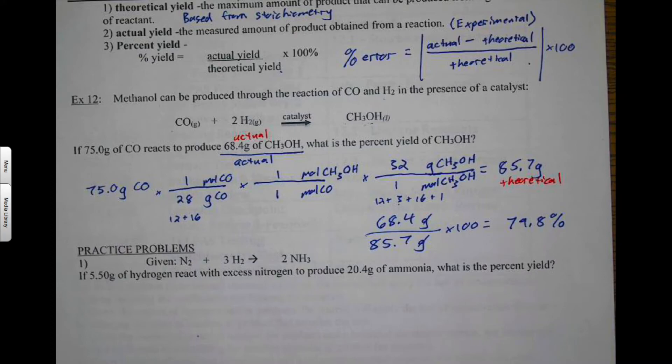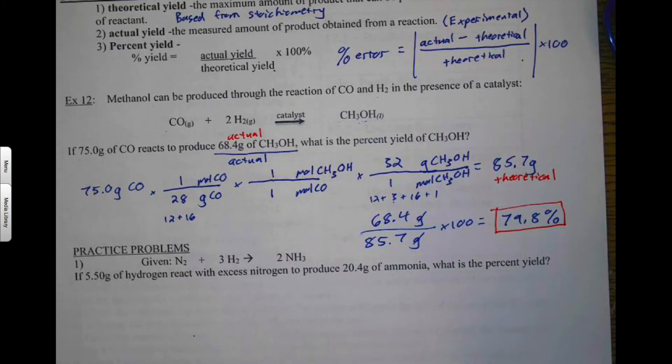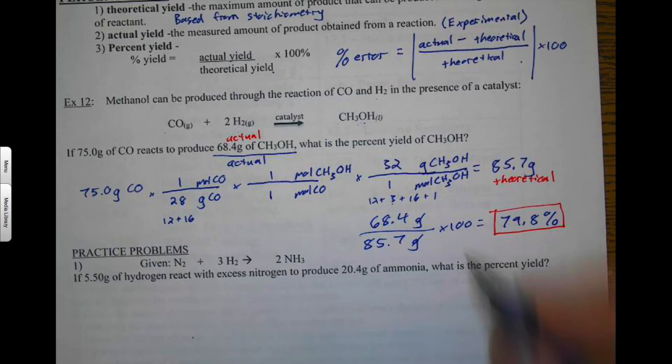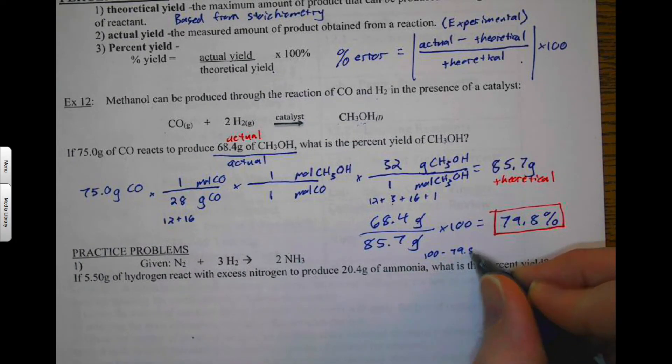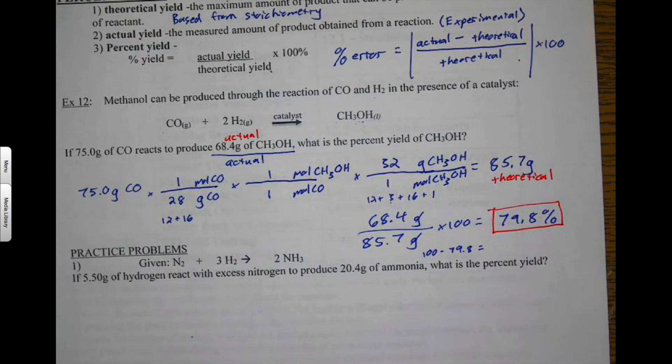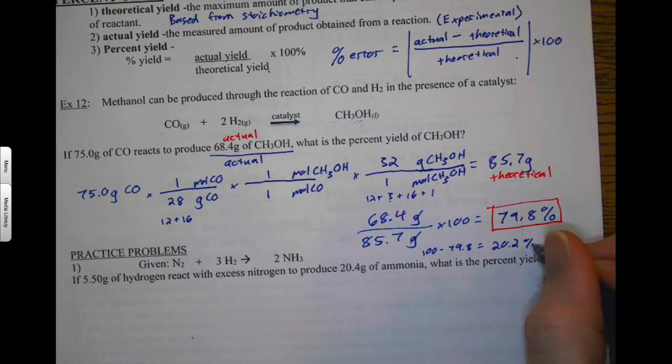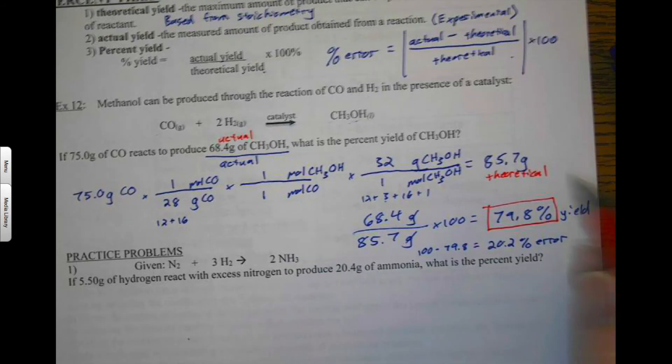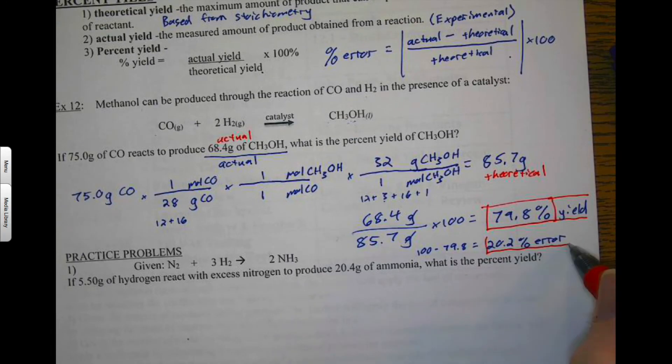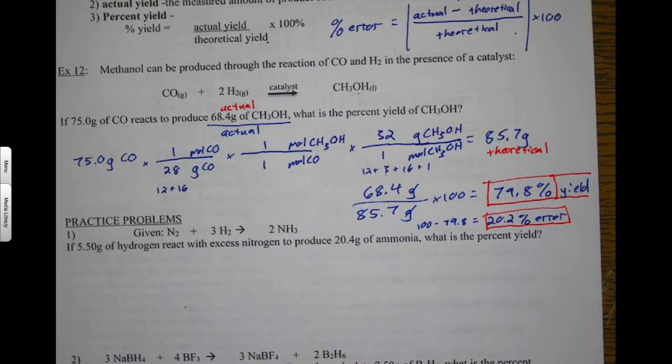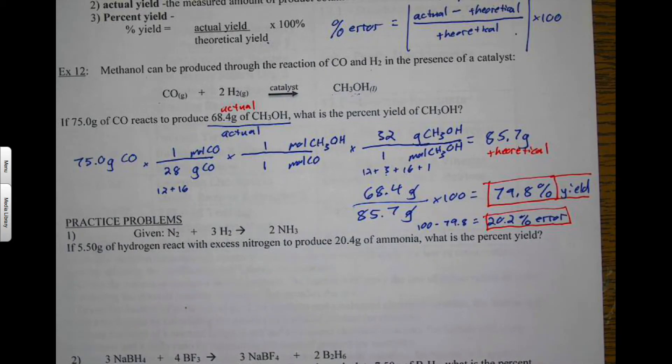Now, if you do, that's your percent yield. That's how efficiently your reaction ran. Now, if you take 100 and subtract it by 79.8, that would be your percent error. So 100 minus 79.8 is 20.2 percent error. So percent yield and percent error can be confused sometimes. So make sure you try to keep them apart. I believe we could test for yield or error, but we will provide both equations to you. So it's not going to be too difficult.